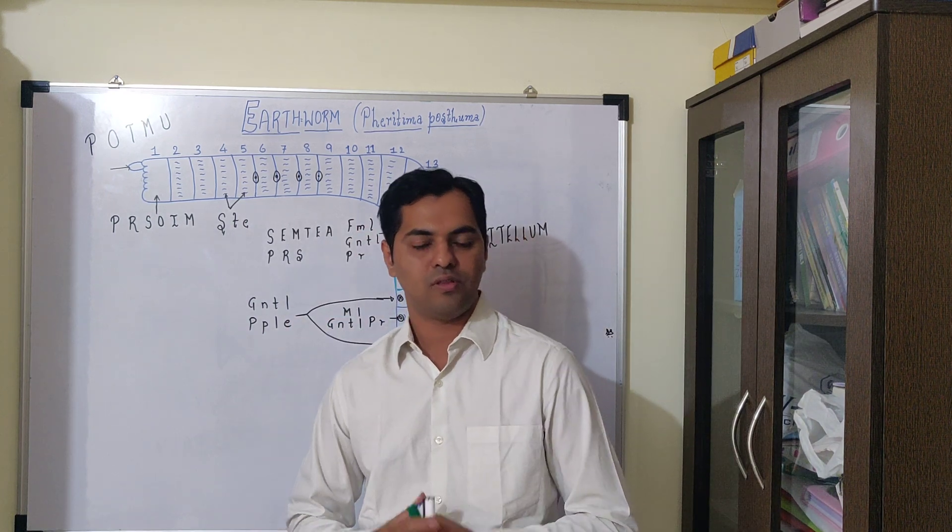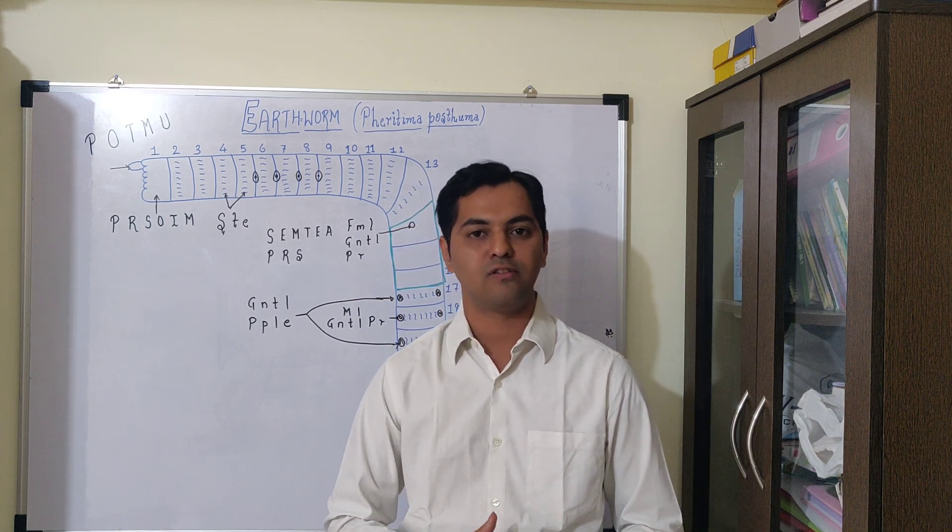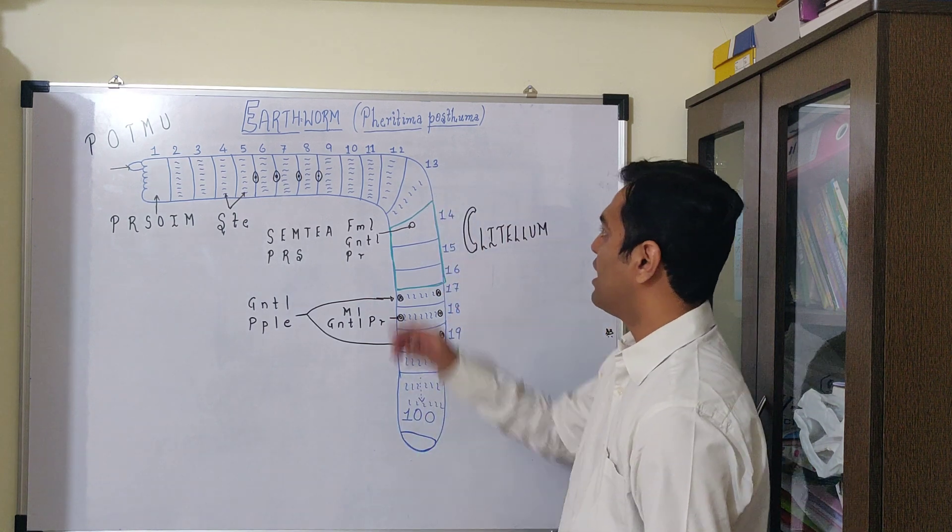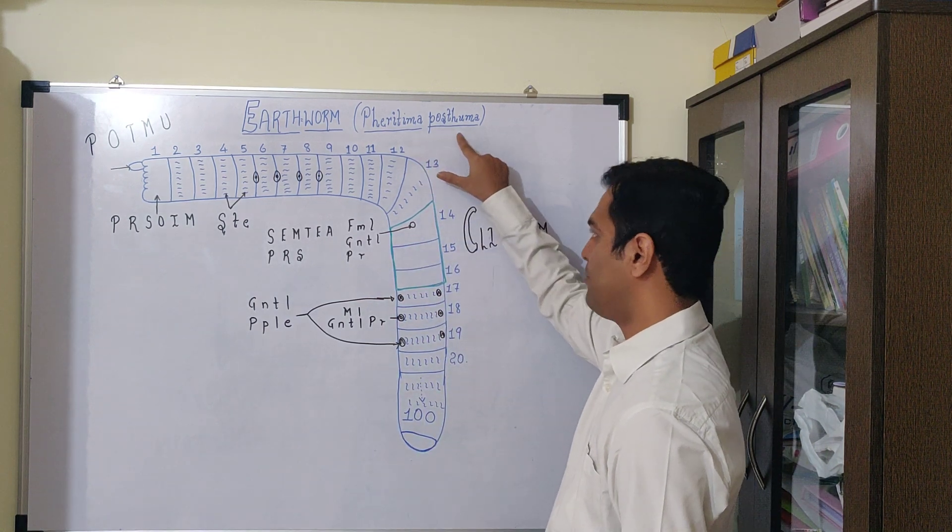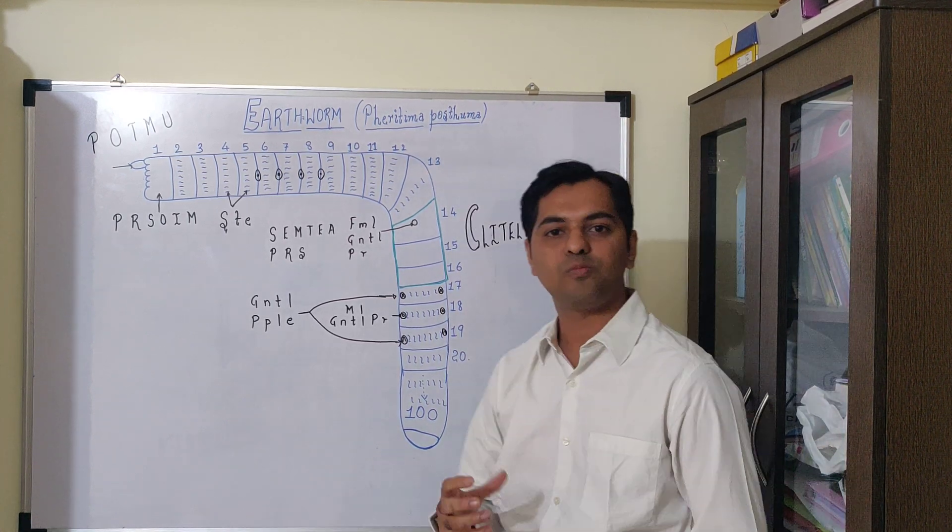Earthworms are mainly found in the soil environment and are considered burrowing in nature. The scientific name of earthworm is Pheretima posthuma, where Pheretima is the genus and posthuma is the species.